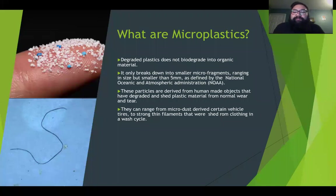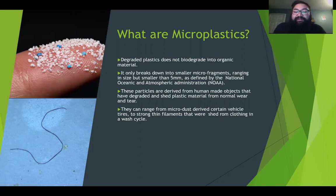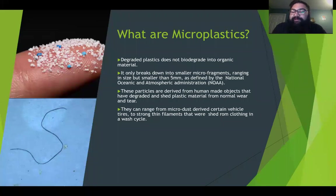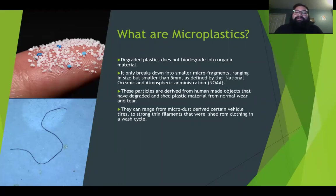So what are microplastics? Generally speaking, they are the remaining bits and fragments of degraded plastic debris that were worn down over time. Unlike natural materials, this man-made substance does not biodegrade, but rather only breaks down into smaller fragments of its original self. As defined by the National Oceanic and Atmospheric Administration, or NOAA, microplastics are small particles of less than five millimeters in diameter, but can also be strands or fibers, which are typically shed through the wash cycle.